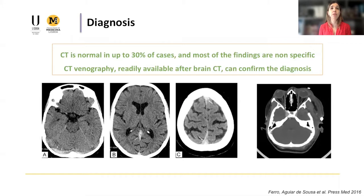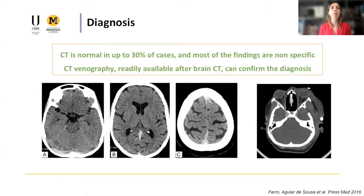Starting with the diagnosis — despite advances in the recognition of CVT in recent years, especially with the more widespread use of high quality imaging, the diagnosis is still one of the most challenging topics in this disease. This is mostly because of the highly variable clinical and imaging presentation, and also because CT, the most commonly used imaging method in the emergency setting, is normal in up to 30% of cases. Even when there are changes, most findings are not specific.